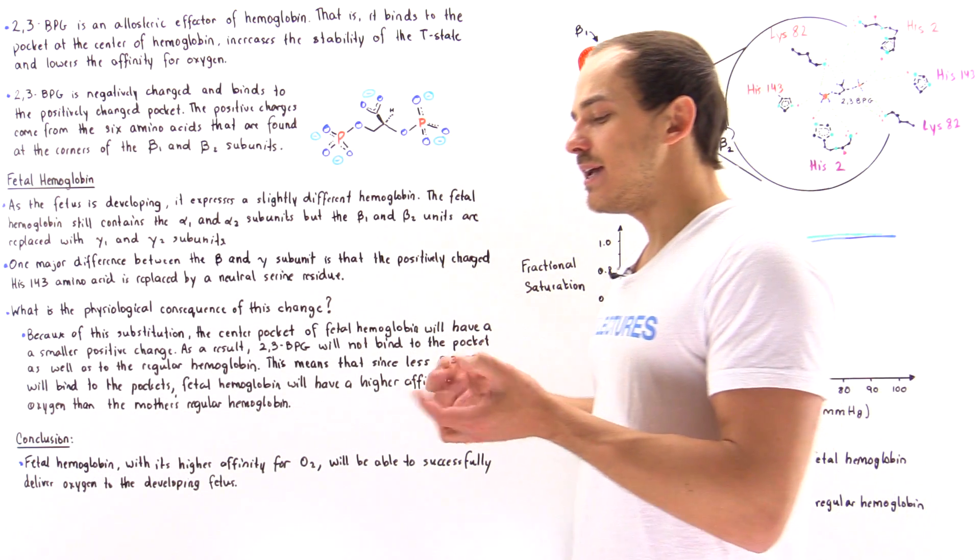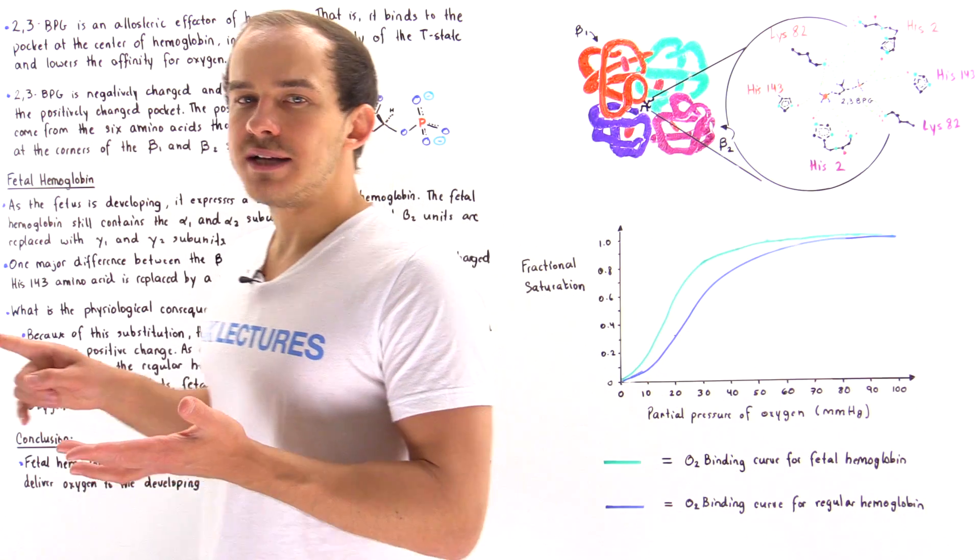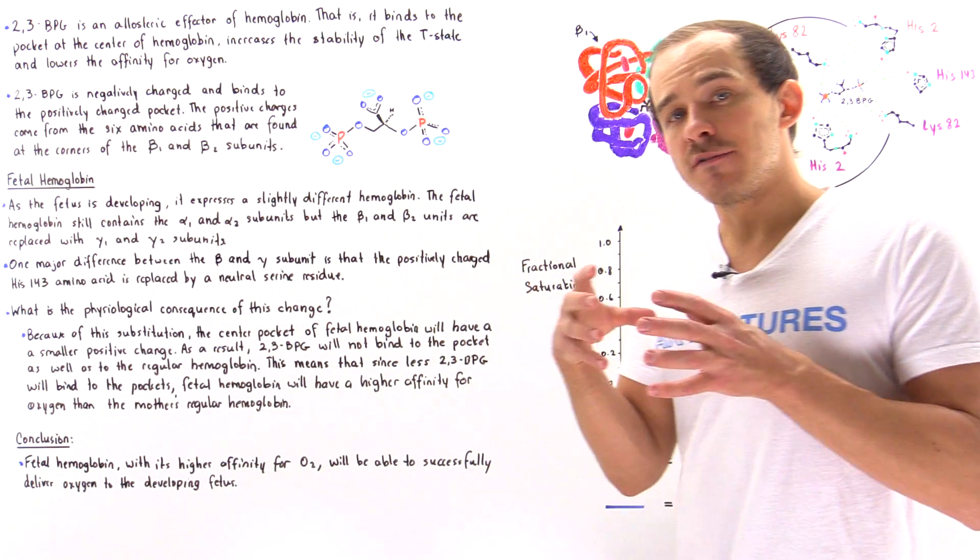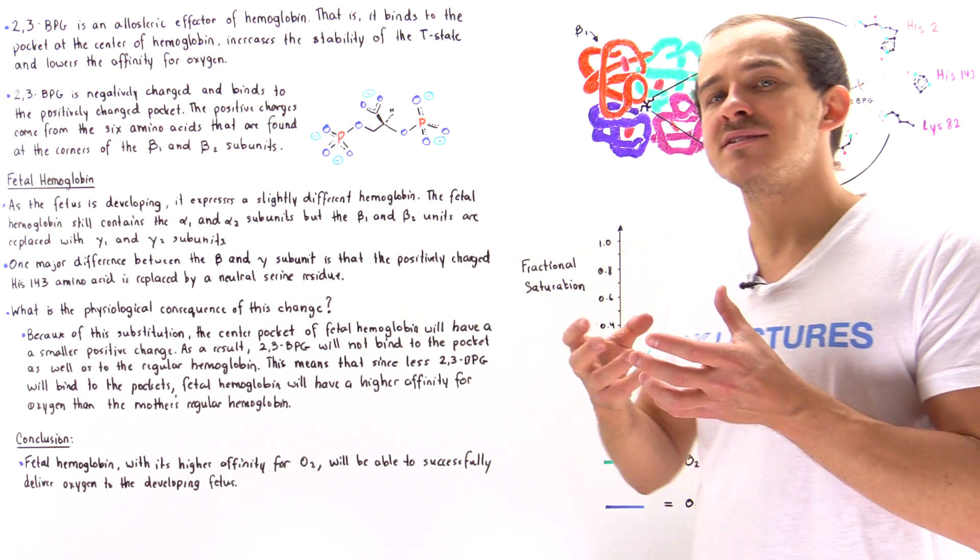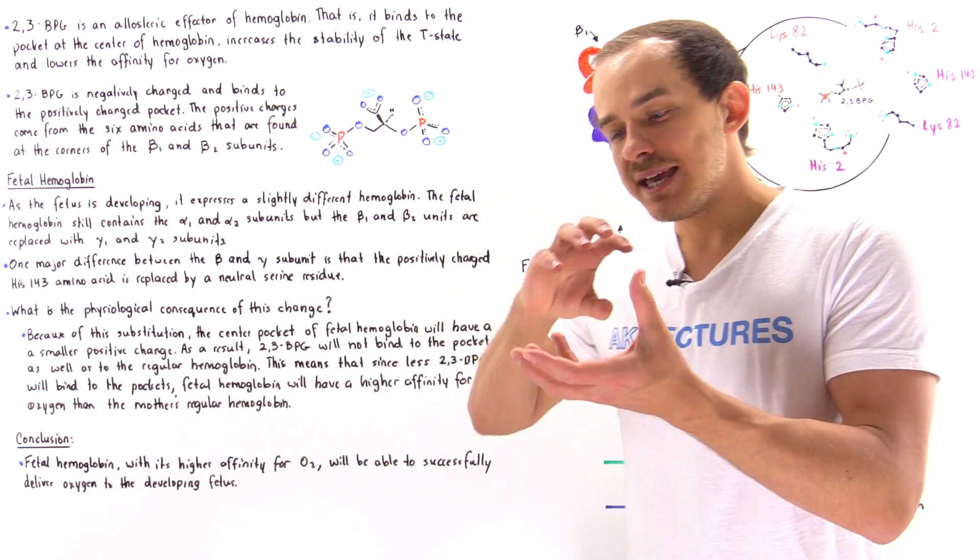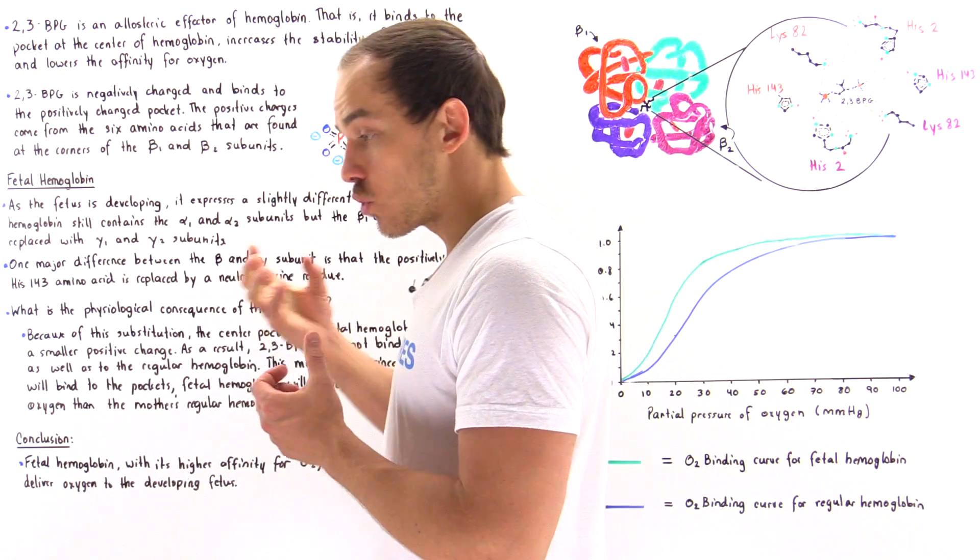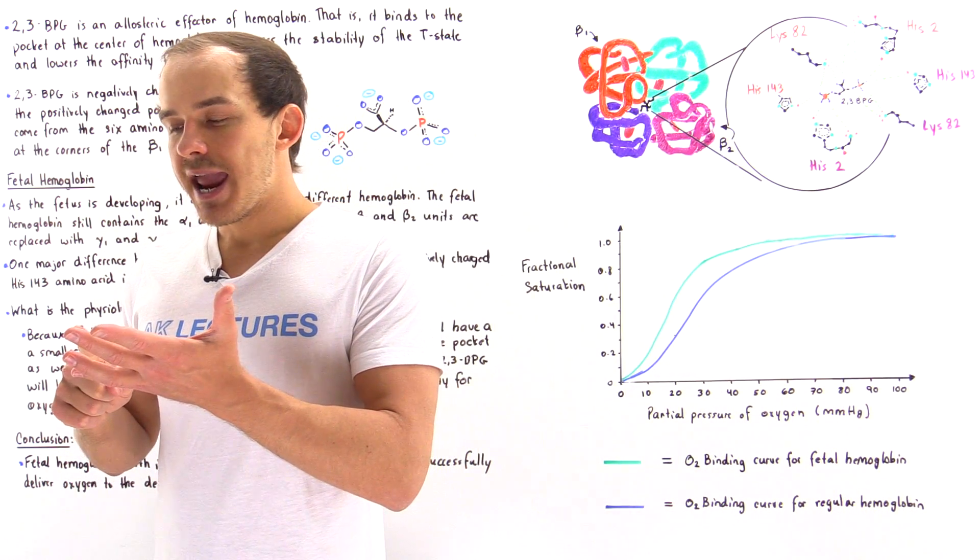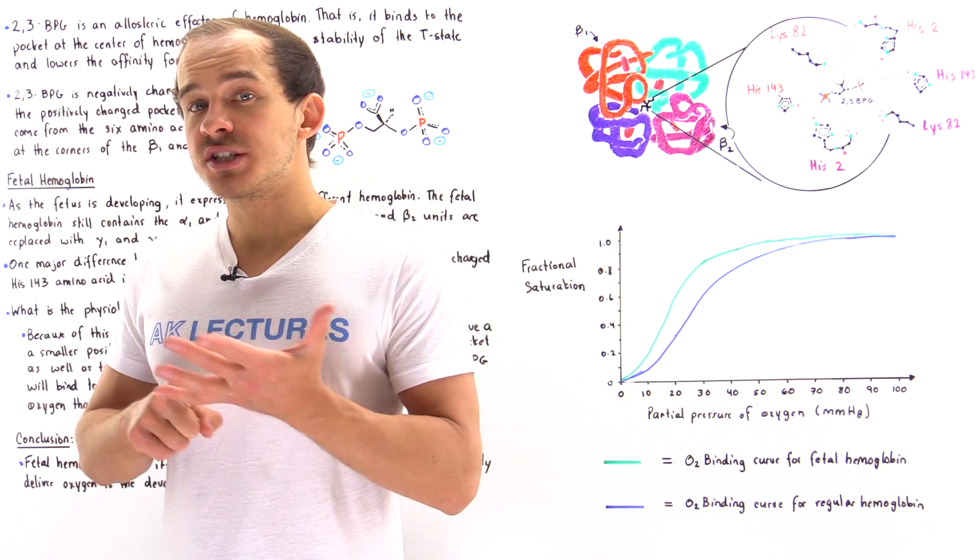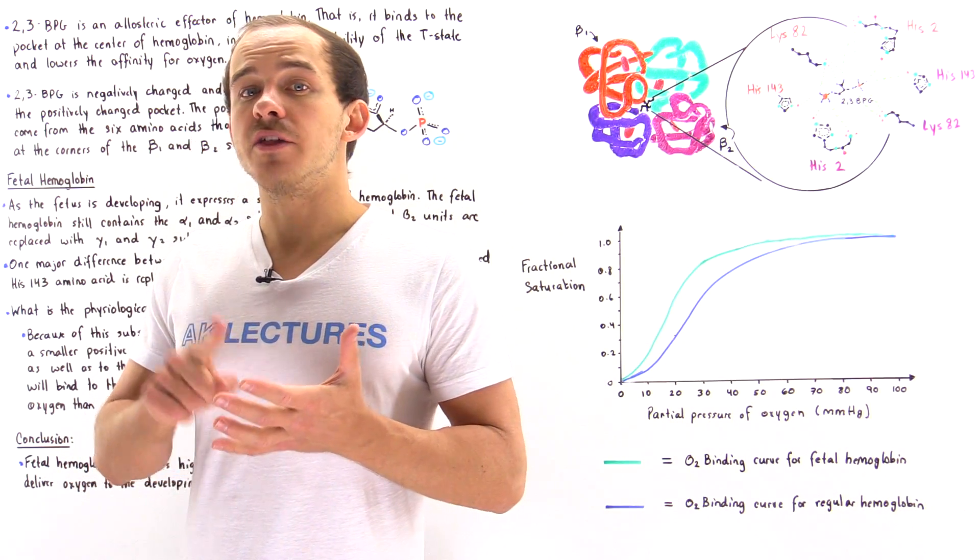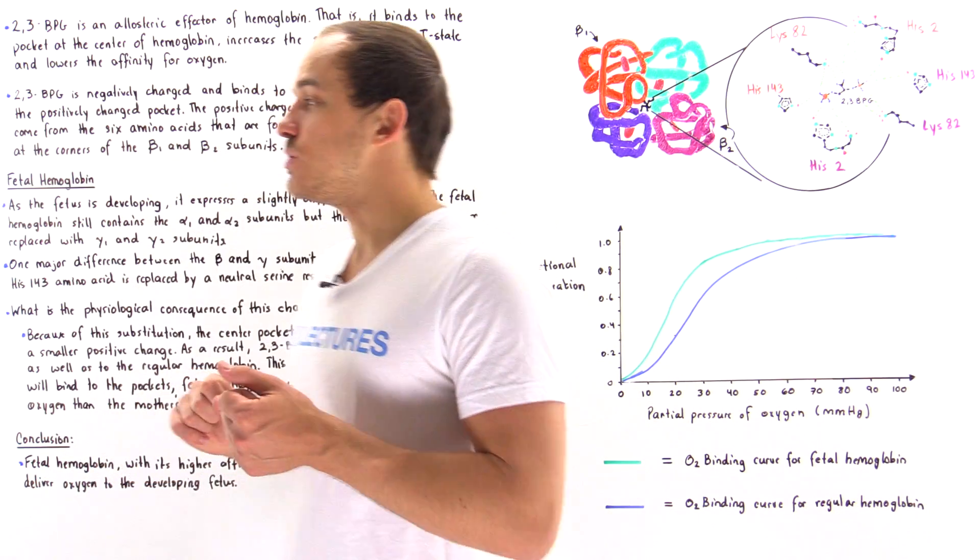How do we say that 2,3-BPG binds onto hemoglobin? At the center of the hemoglobin is this positively charged pocket, this region of space that contains positive charges. And these positive charges come from 6 different amino acids, which are found on the beta-1 and beta-2 subunits.